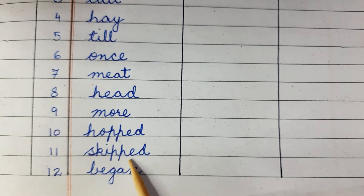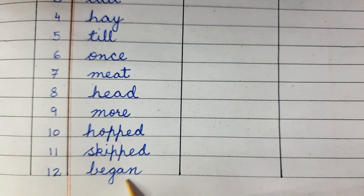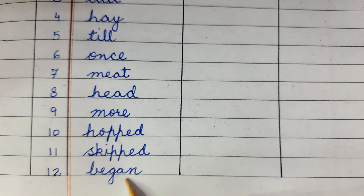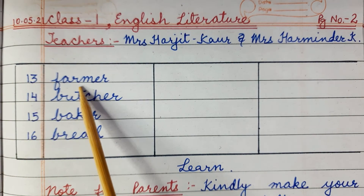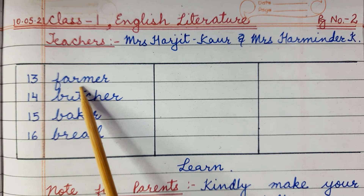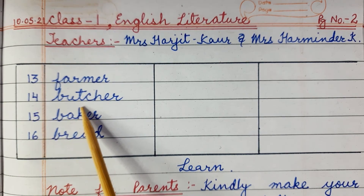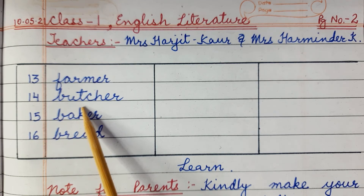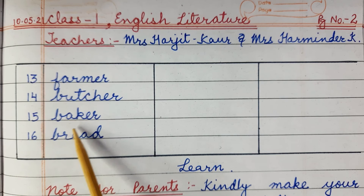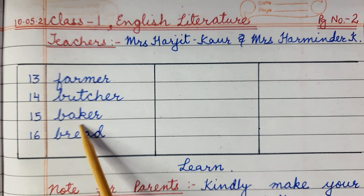Eleventh: skipped, S-K-I-P-P-E-D, skipped. Twelfth: began, B-E-G-A-N, began. Thirteenth: farmer, F-A-R-M-E-R, farmer. Fourteenth: butcher, B-U-T-C-H-E-R, butcher. Fifteenth: baker, B-A-K-E-R, baker.